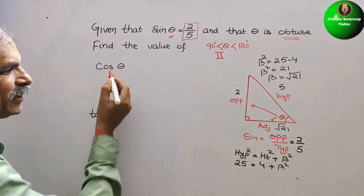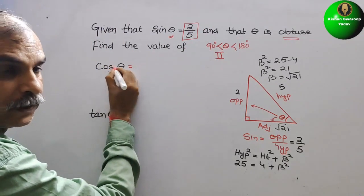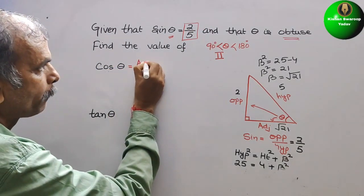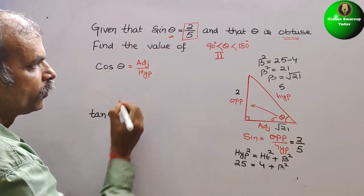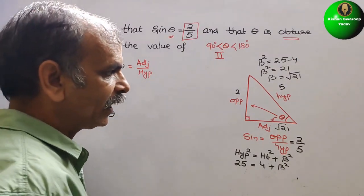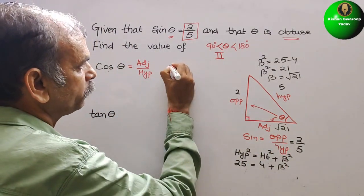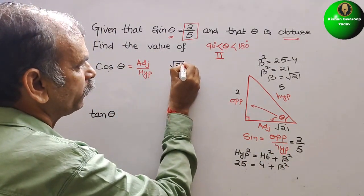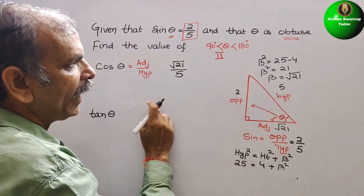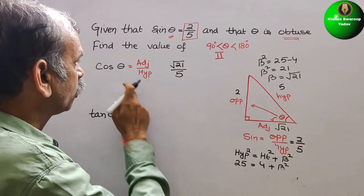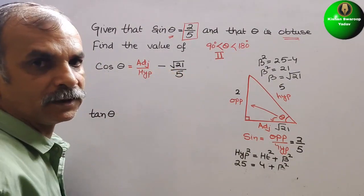Now we will come here, cos theta. Cos theta here, cos is what? Adjacent by hypotenuse. So now we can see here, adjacent is root 21. So simply we will write here, root 21 by hypotenuse is 5. And for the second quadrant, cos theta is negative. So here we will write minus here.